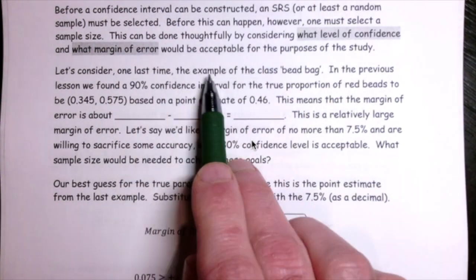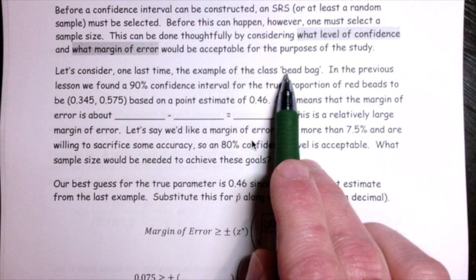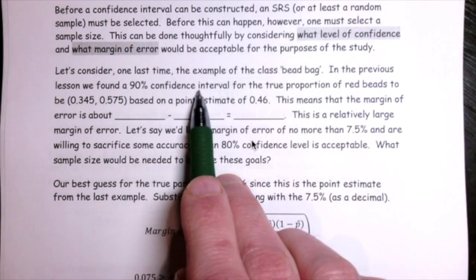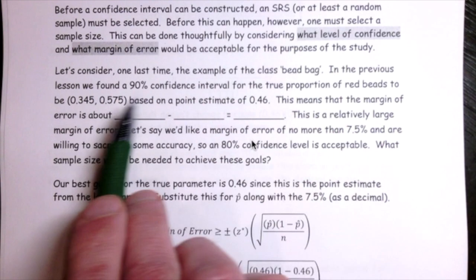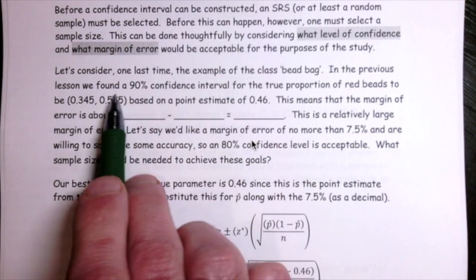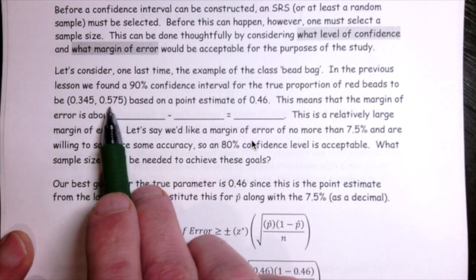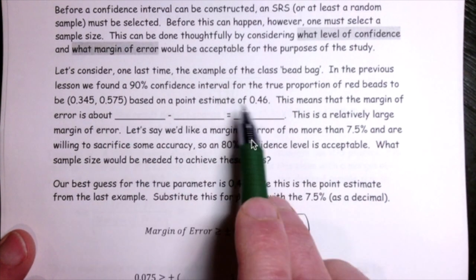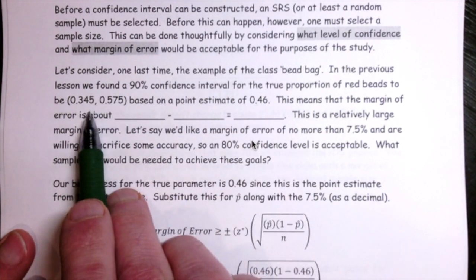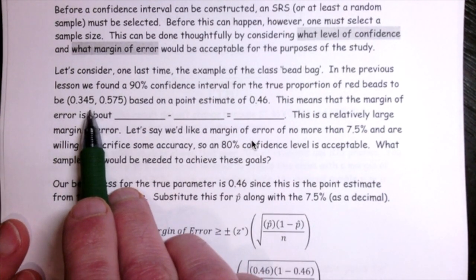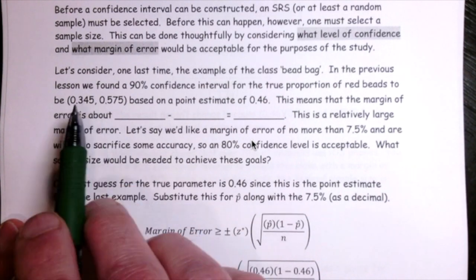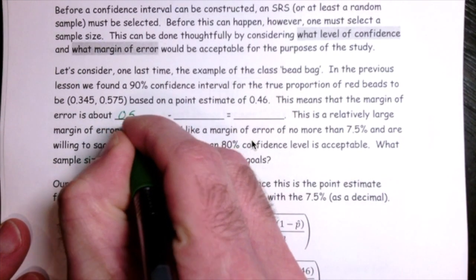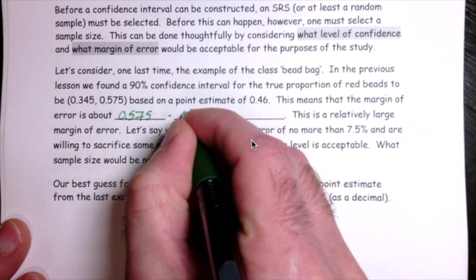Let's consider one last time the class bead bag. In the previous lesson, we found a 90% confidence interval for the true proportion of red beads, with a lower and upper boundary based on a point estimate of 0.46. I can use that point estimate and the confidence interval to work backwards and figure out the margin of error. Our margin of error: take the upper boundary of 0.575 and subtract away the point estimate.